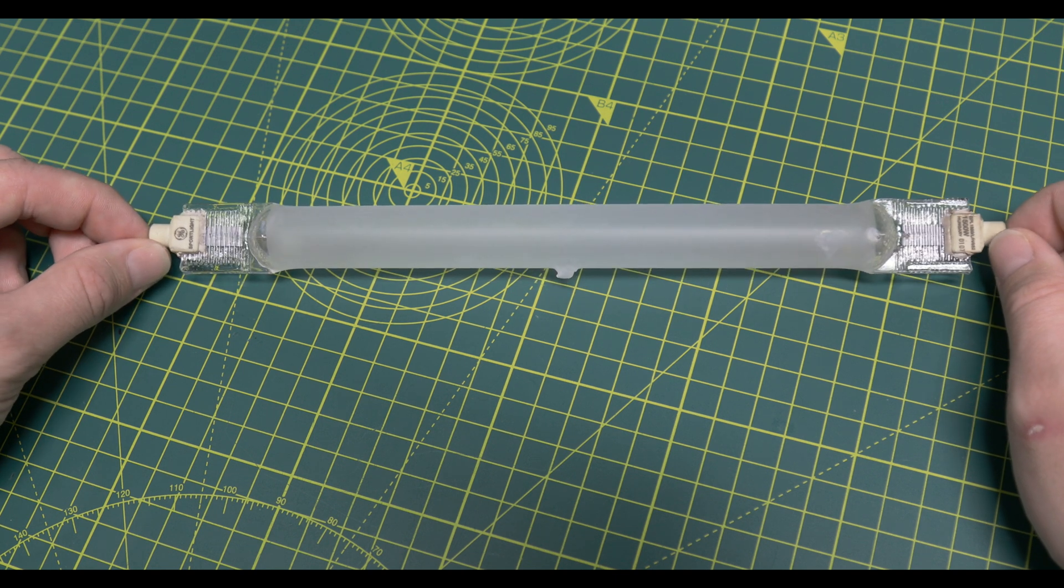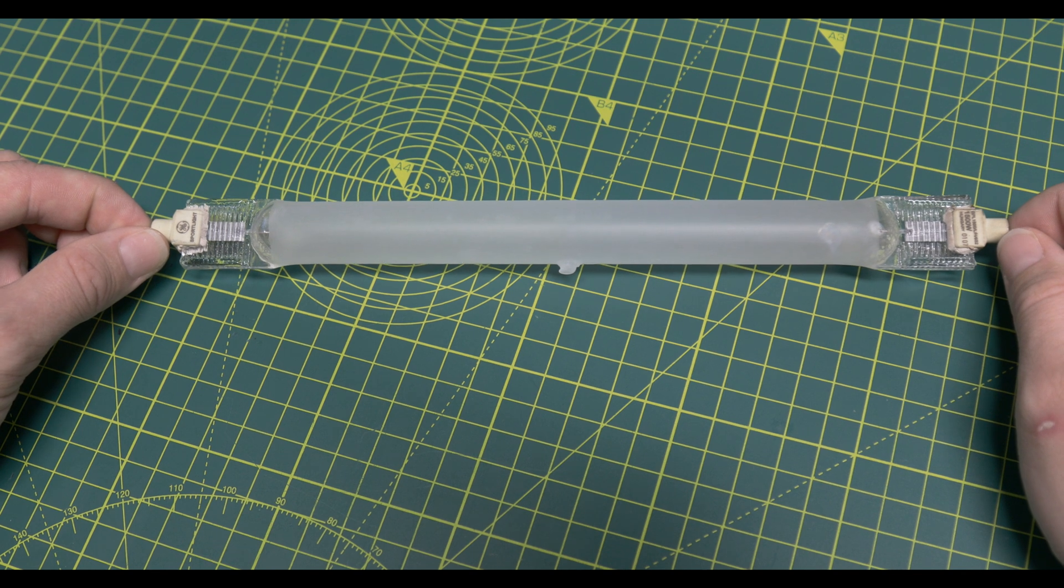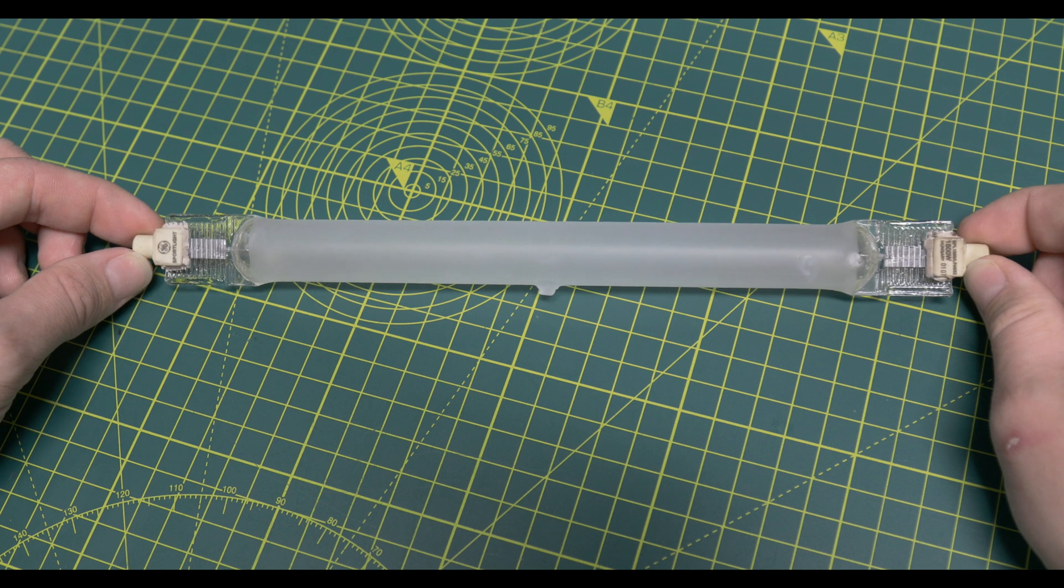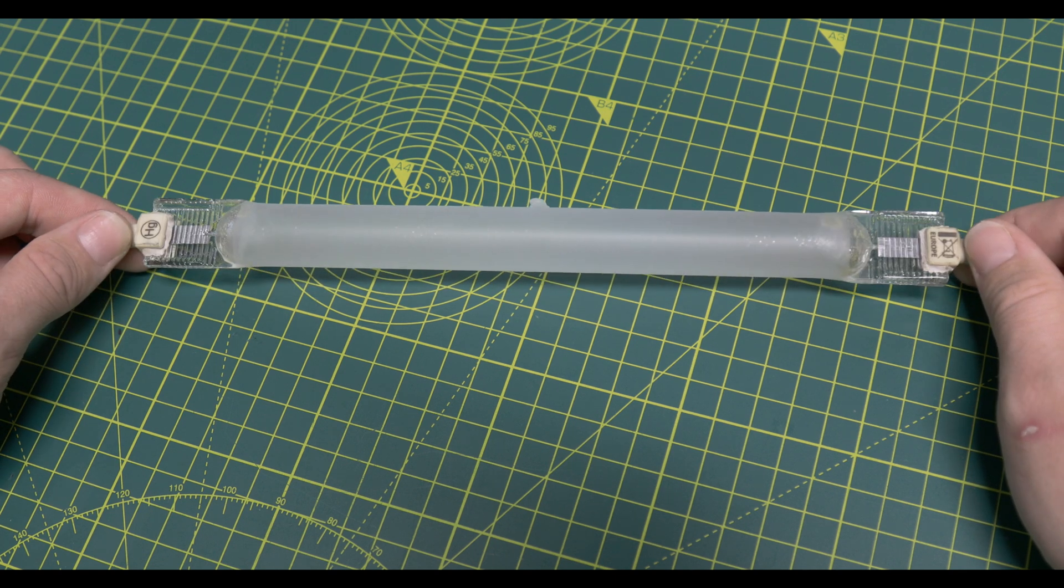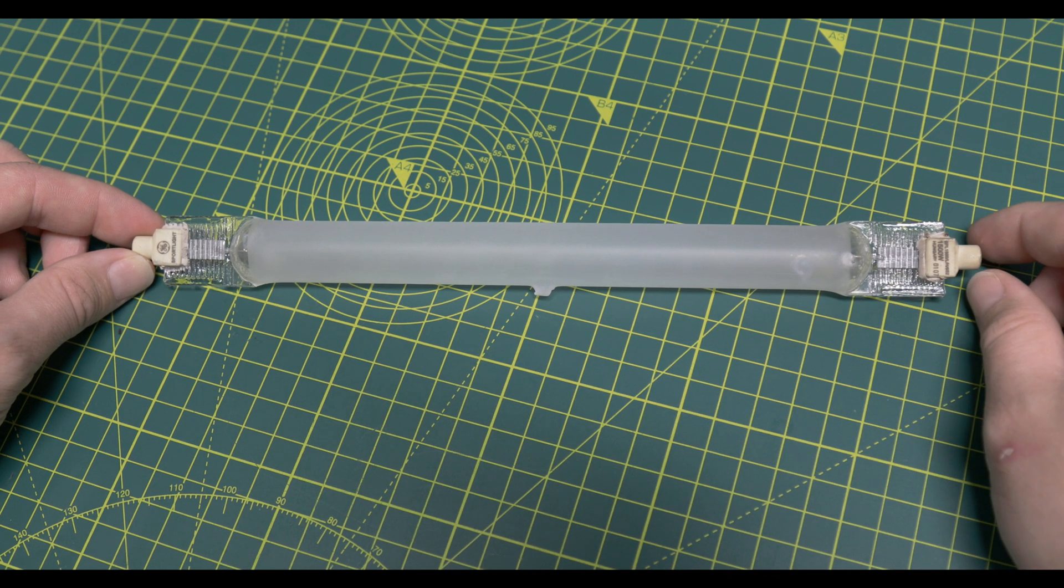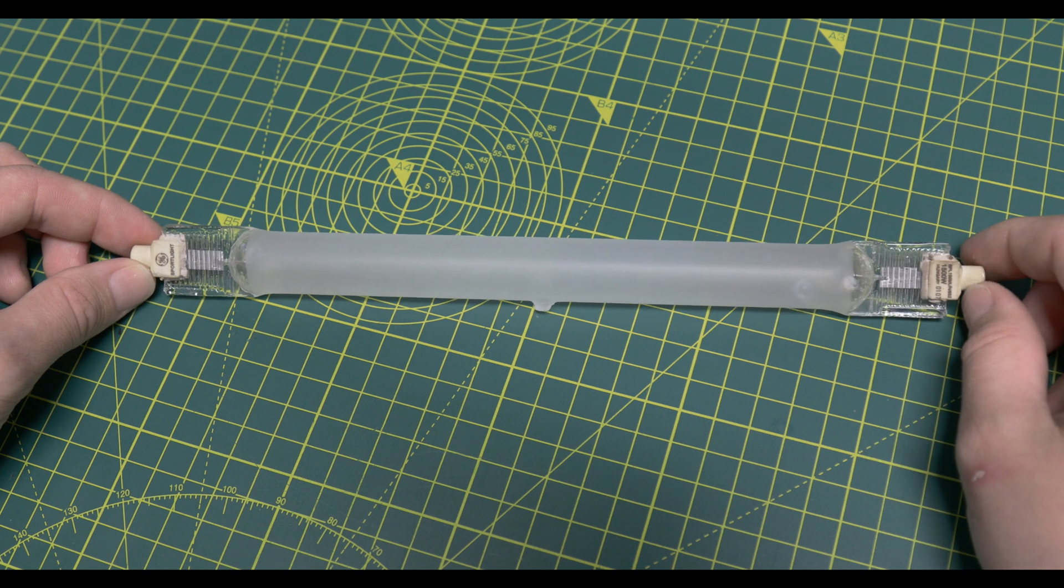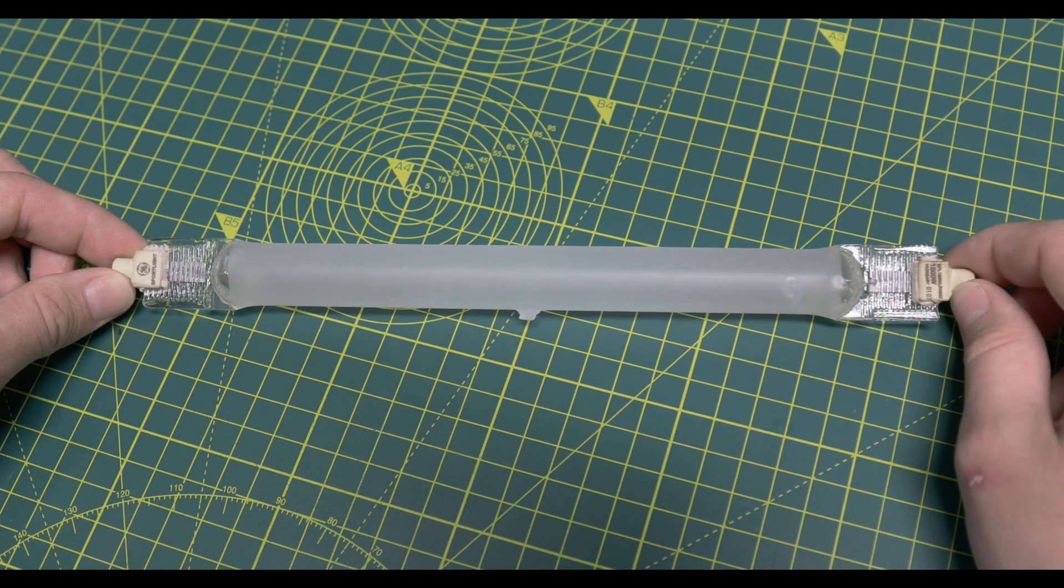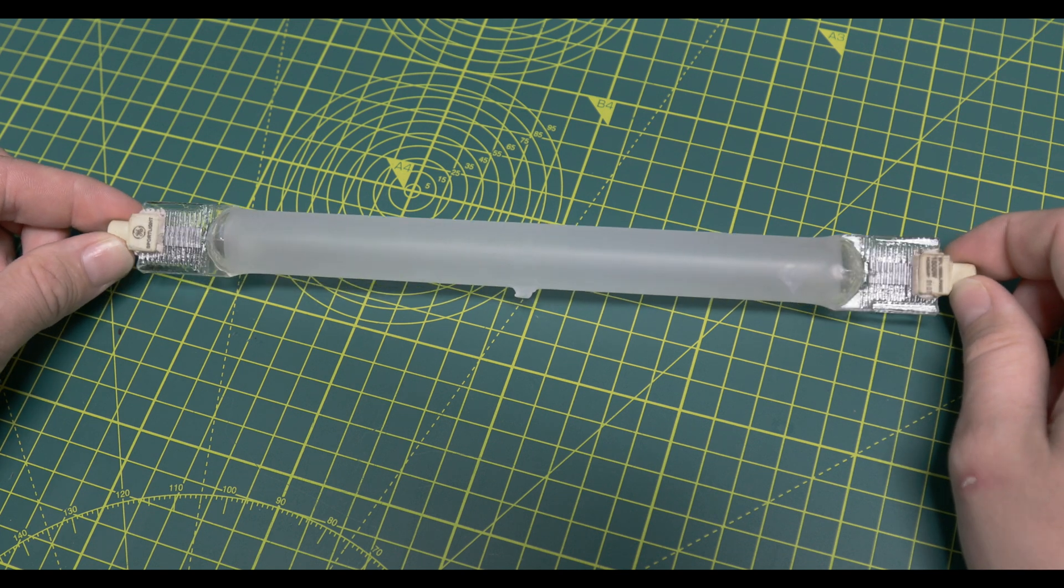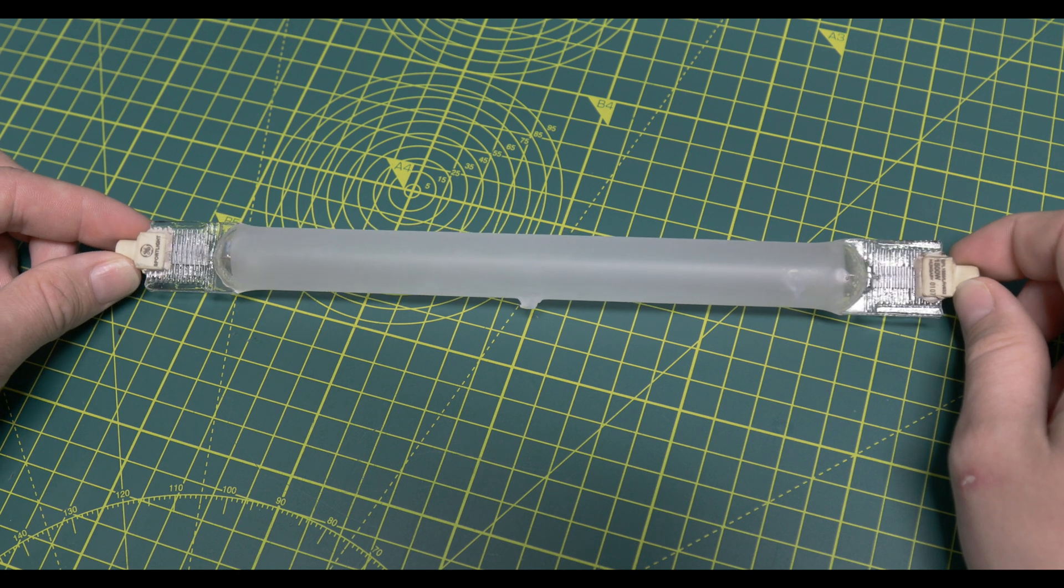It provides 120,000 lumens at a color temperature of 5200 Kelvin with a fairly reasonable color rendering index of 65%. This example is made in Hungary. The reason why this is frosted is to improve the color uniformity because it's a massive arc. These are actually still made and used because of the very good color stability throughout the lamp's lifetime.